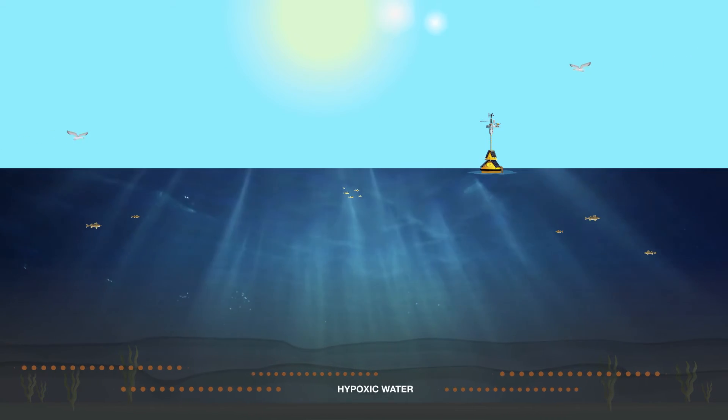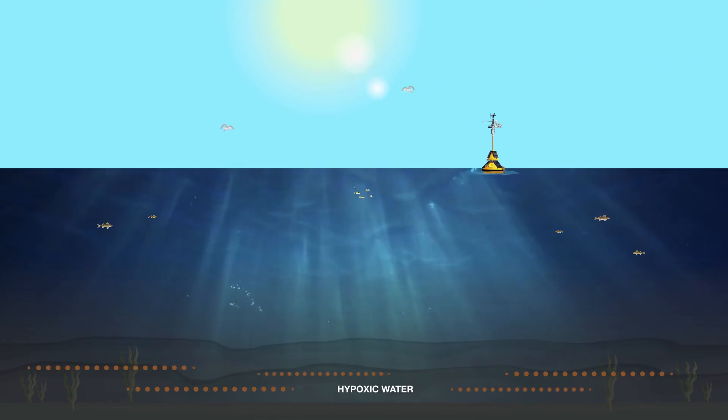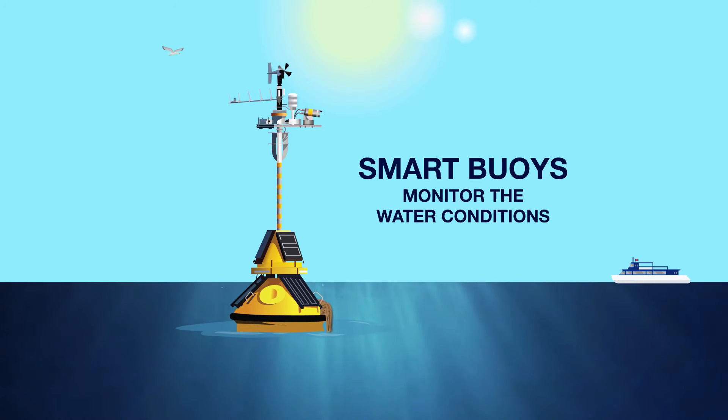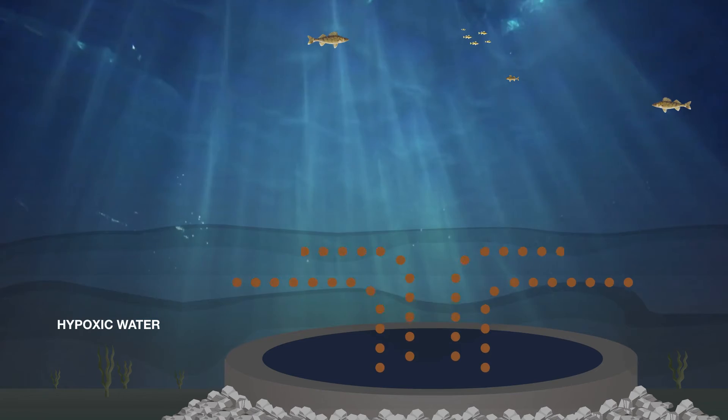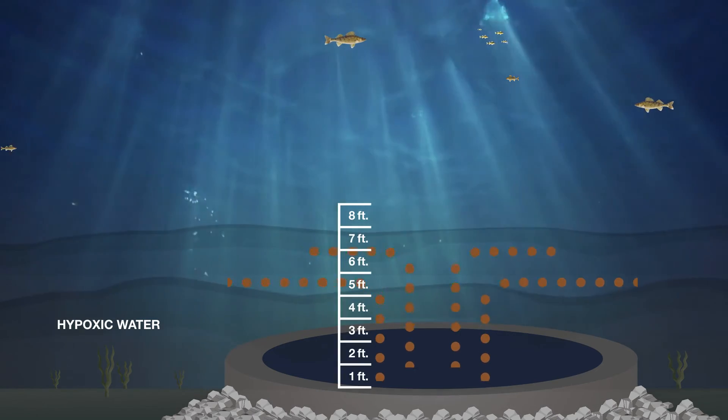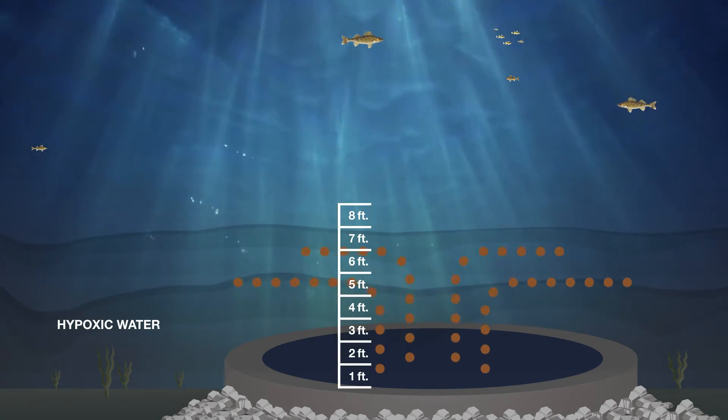Hypoxic water tends to hug the bottom of the lake. Analysis of data collected by our four water quality buoys tells us that the hypoxic water generally goes no higher than seven feet above the top of the current Nottingham Crib.